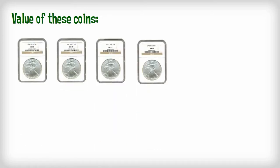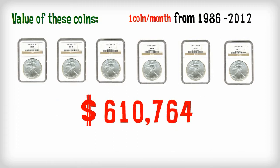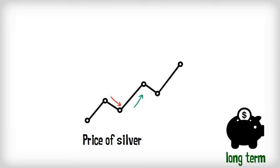Let's take a look at what your coins would be worth if you had purchased one coin a month from 1986 through 2012. Over $600,000 from just purchasing one coin a month. My point is this. The price of silver may fluctuate from month to month, but history proves that if you use this as a consistent, long-term asset accumulation strategy, the value of the coins you purchase will increase significantly.